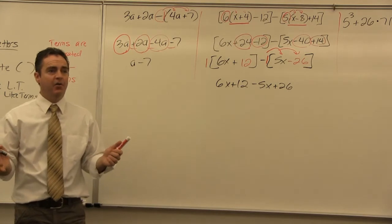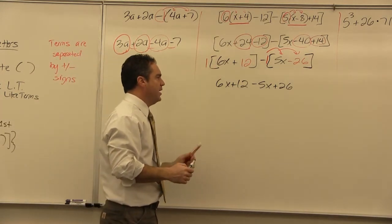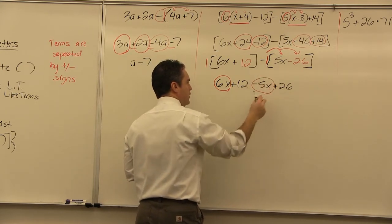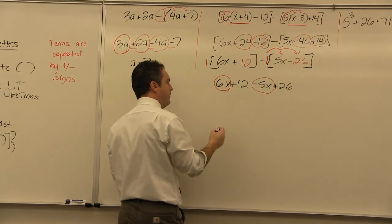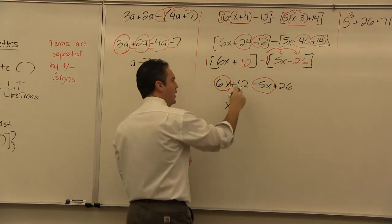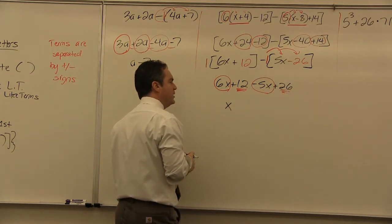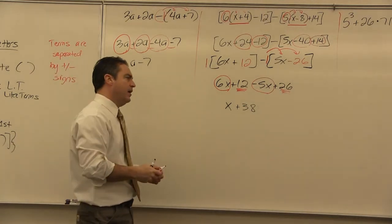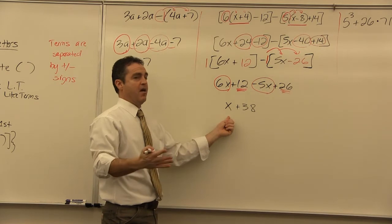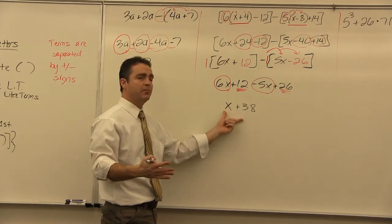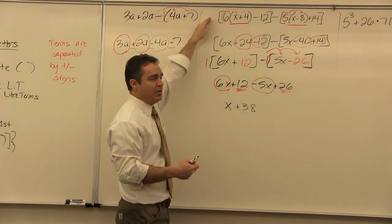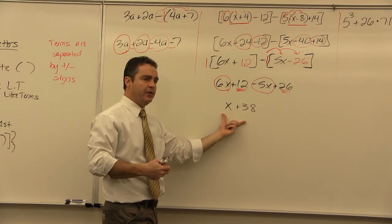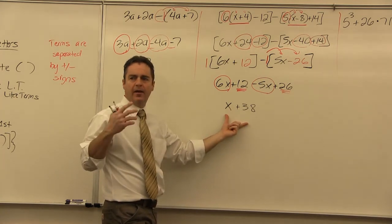No more parentheses. Now combine like terms: 6x and negative 5x make 1x, which we just call x. The numerical terms 12 and 26 make plus 38. Am I done? I don't know what x equals, and I don't care — it's a simplified problem. No more parentheses, no more like terms. I am done. Look how complex this was when we began; we've brought it all the way to x + 38.